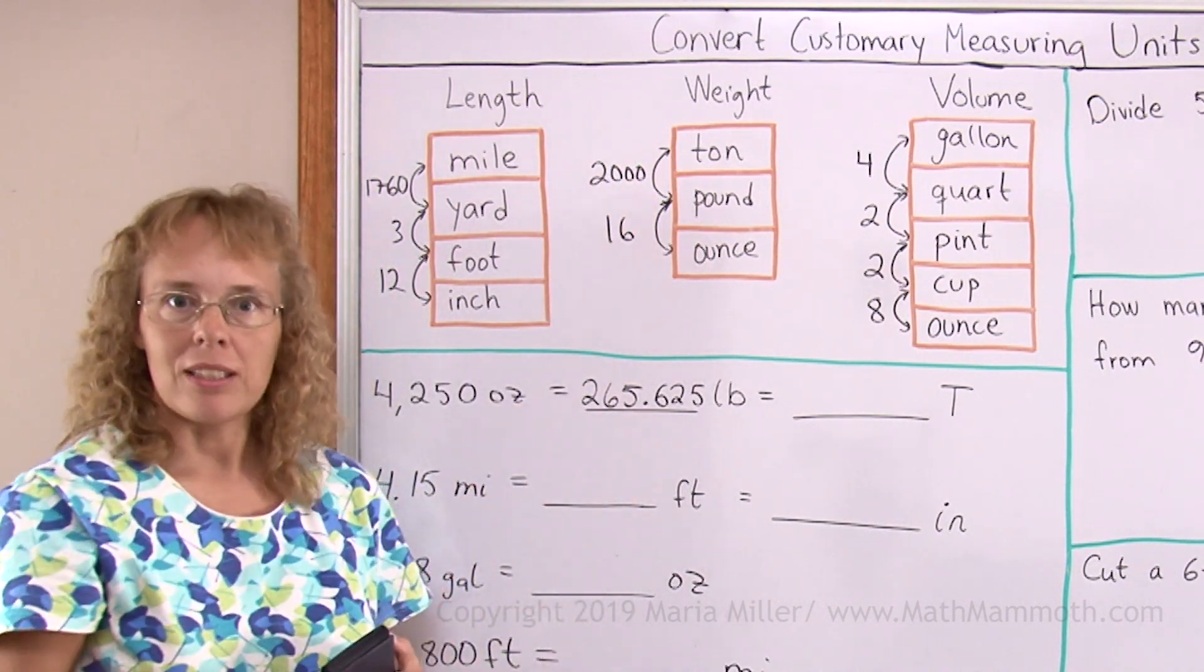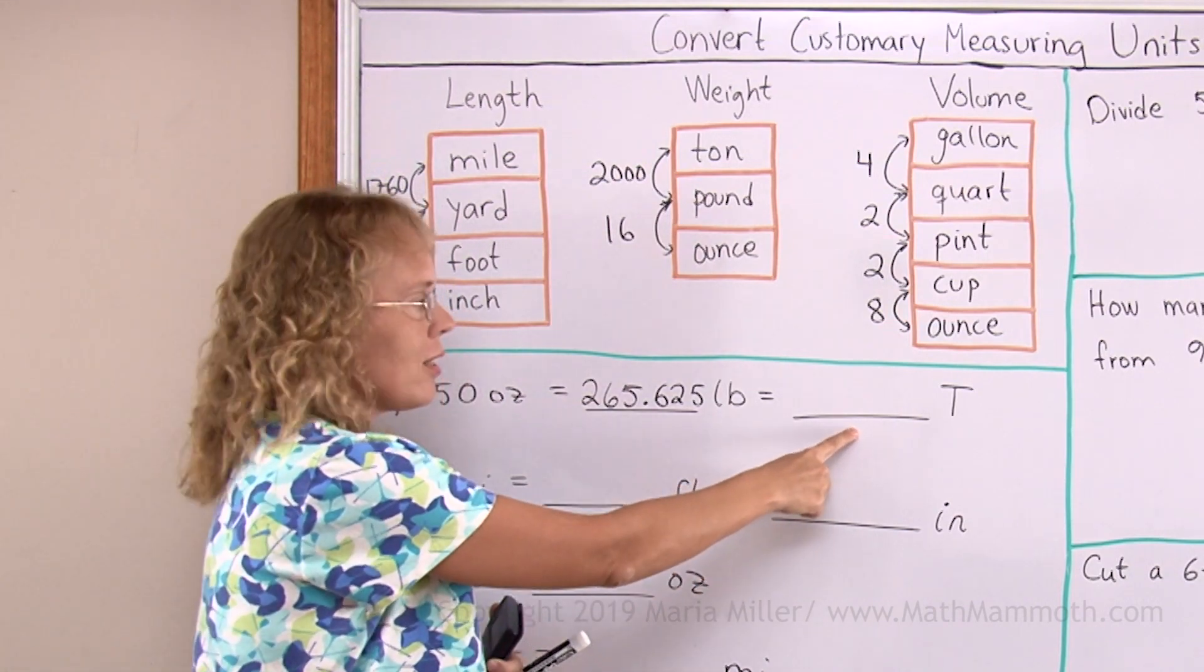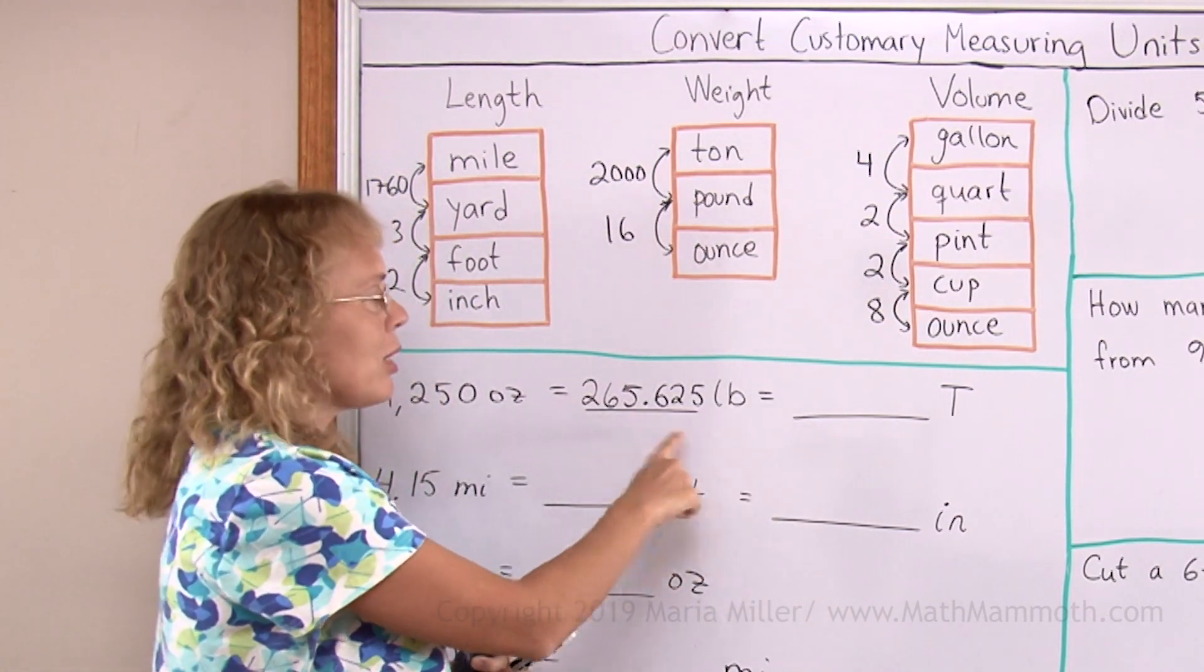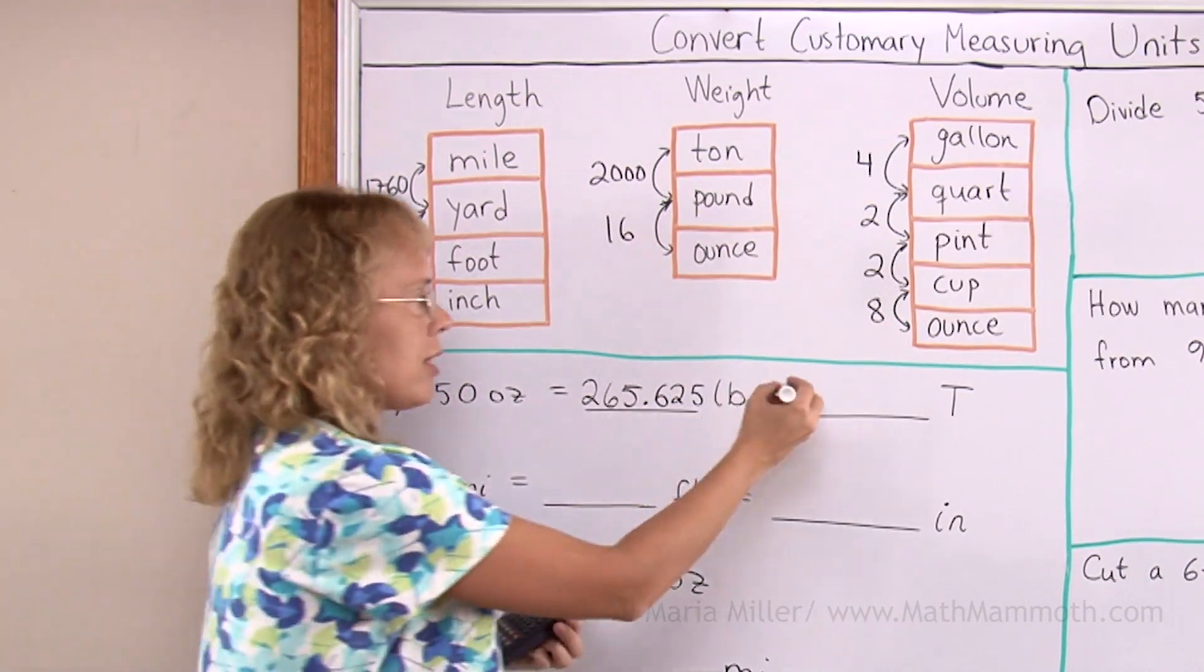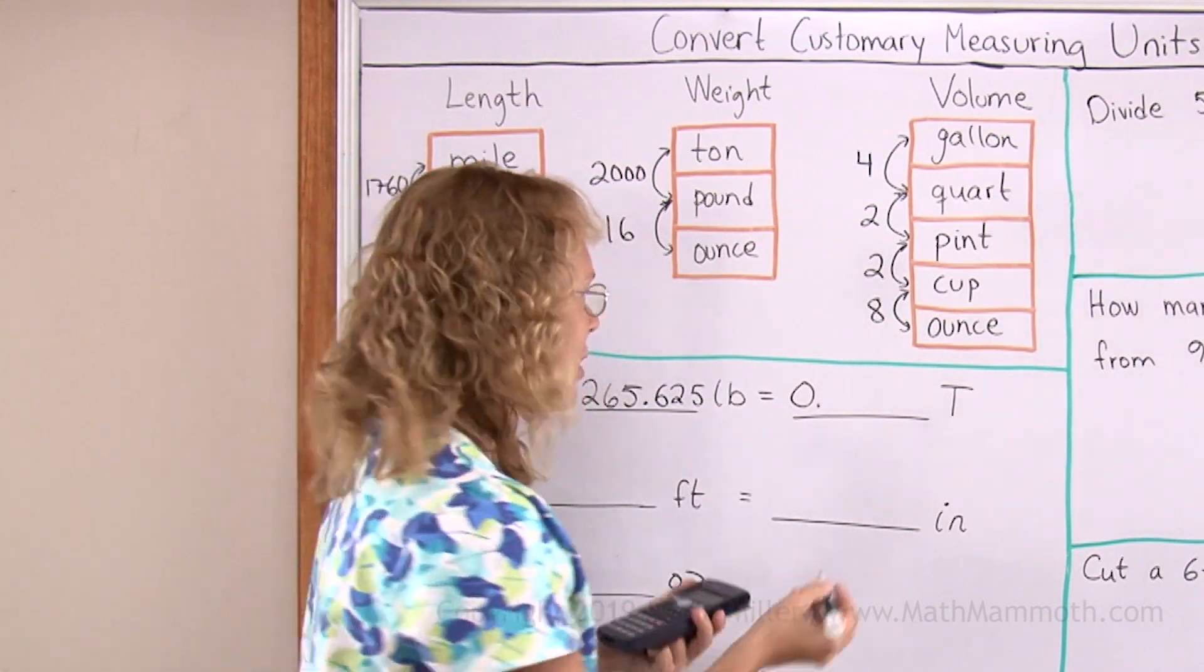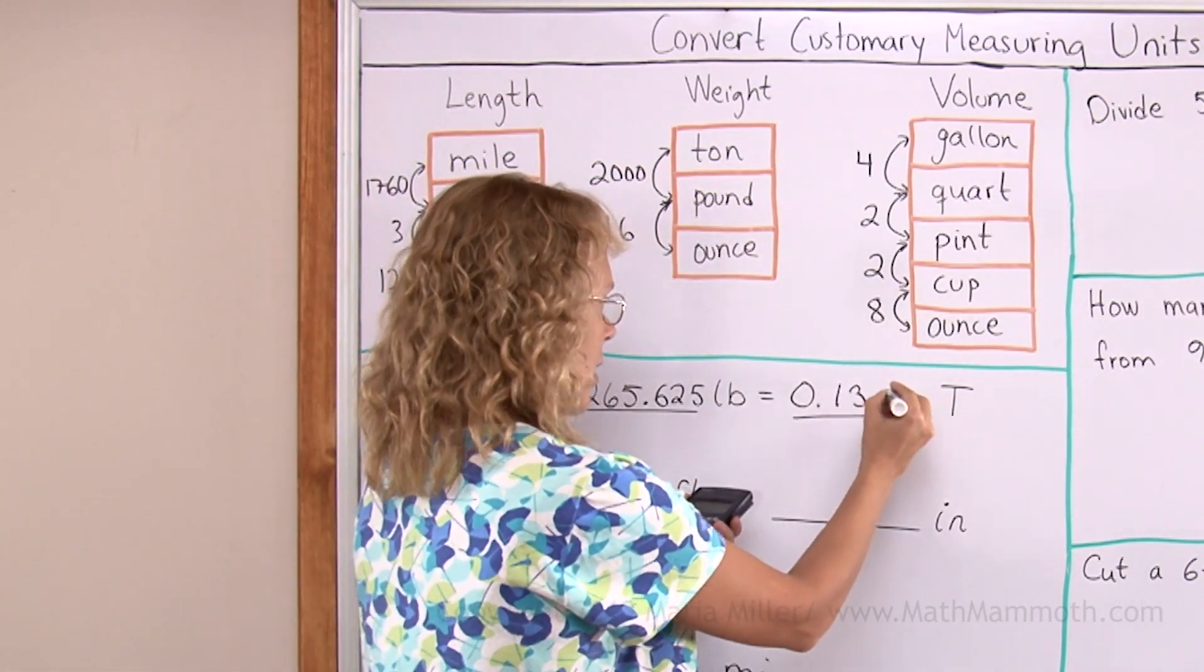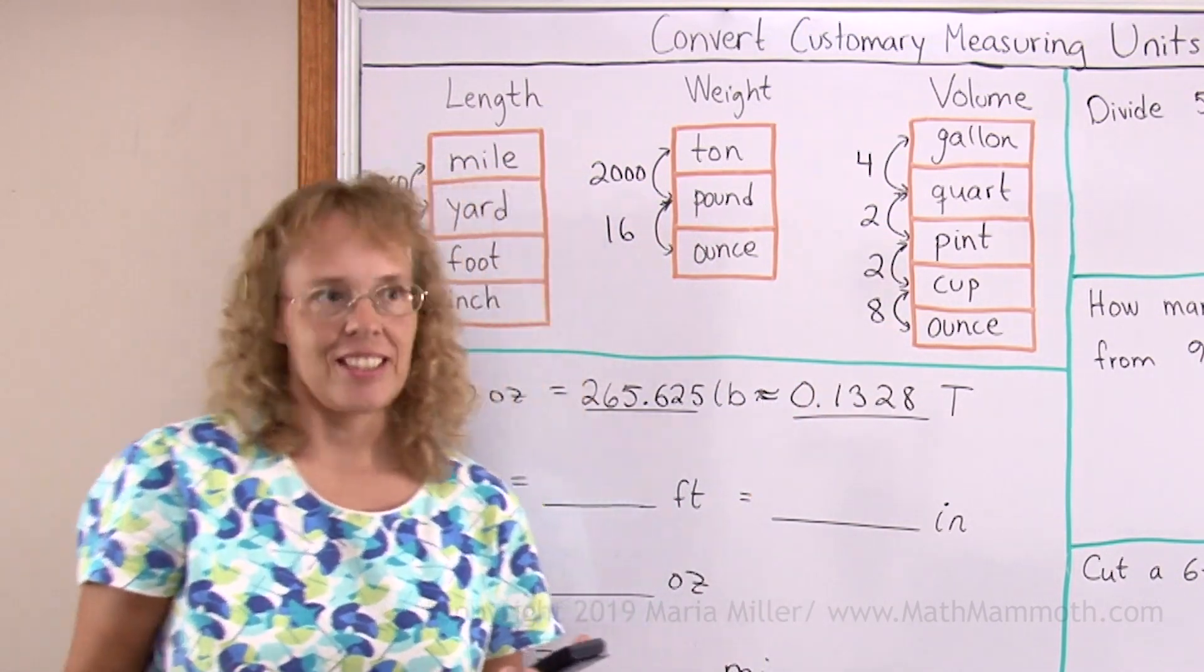Of course I will get the decimal number here. It is 265.625 pounds. Now I will also convert this to short tons. And as you see those 2000 pounds would make a ton. This is not even one ton, right? So this number here will be less than one. Again, I will divide it by 2000.